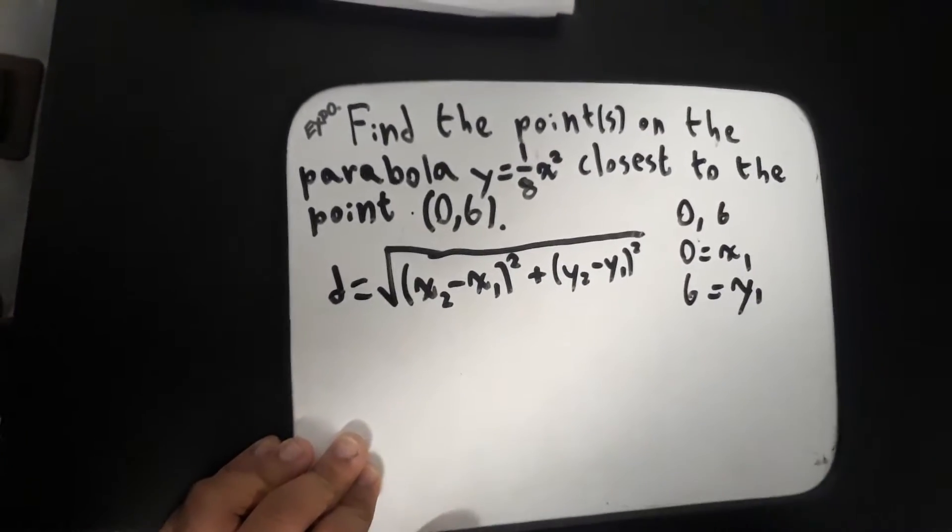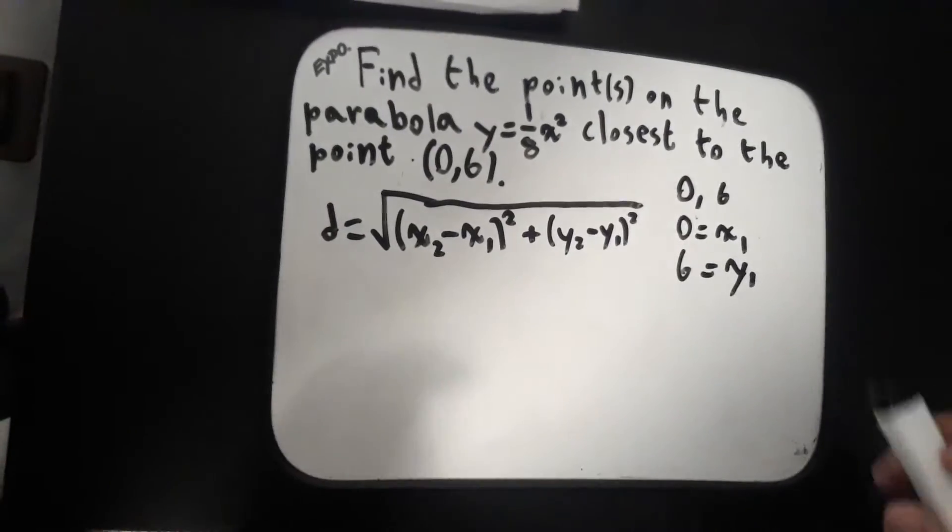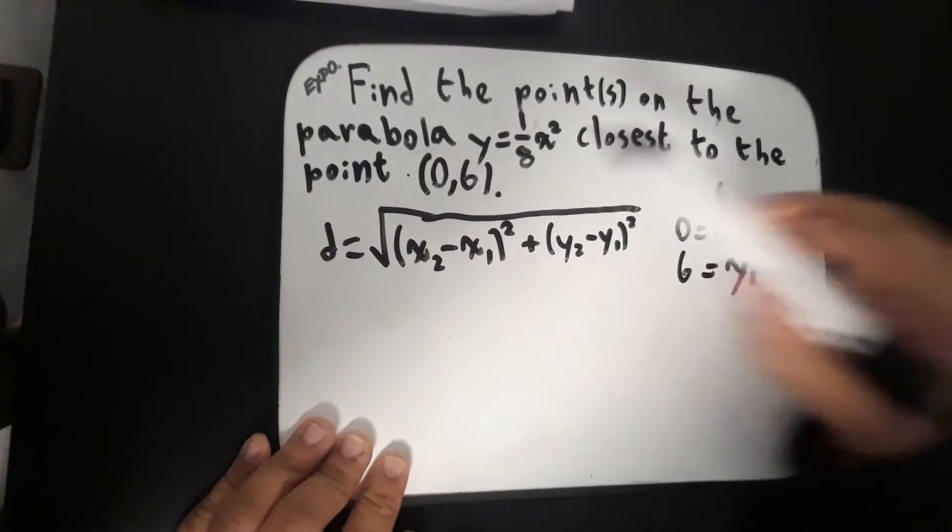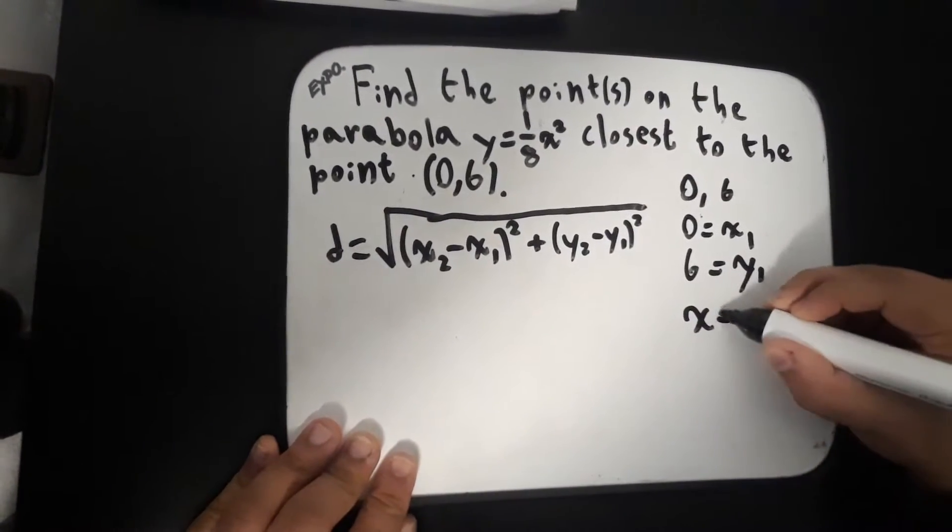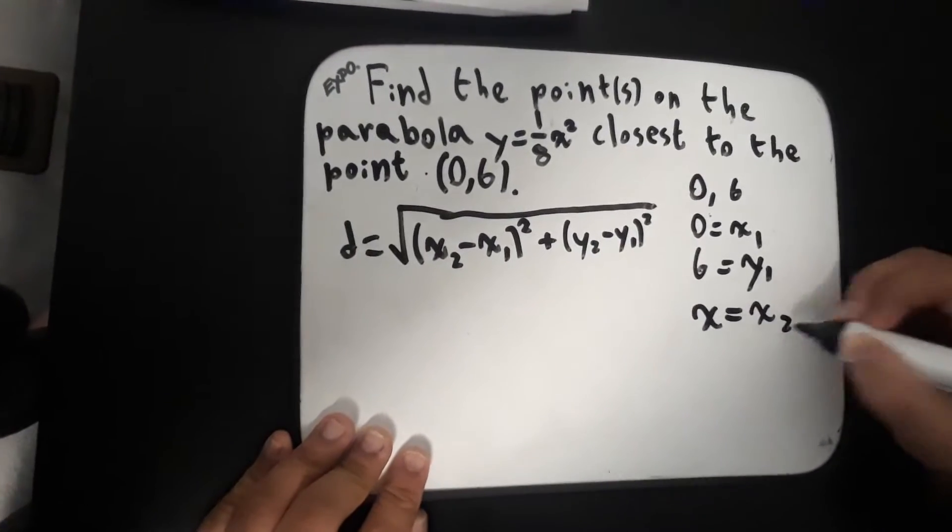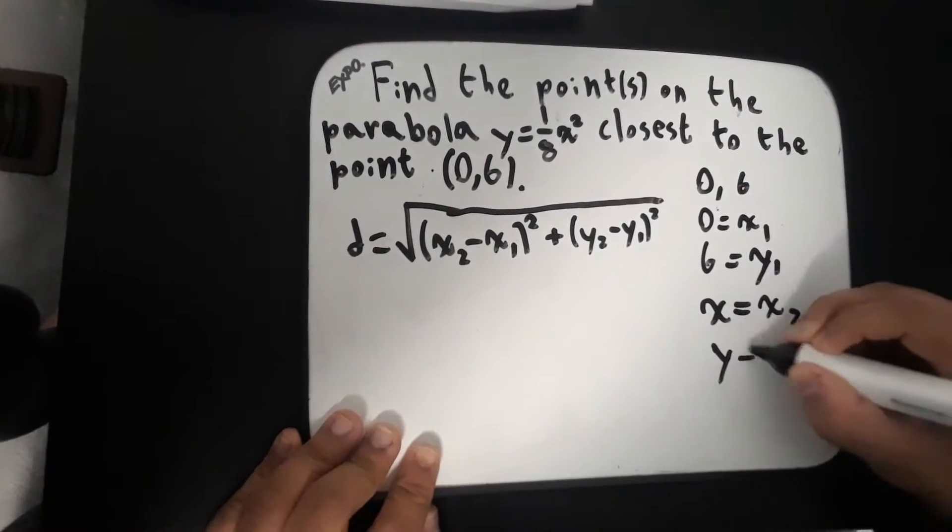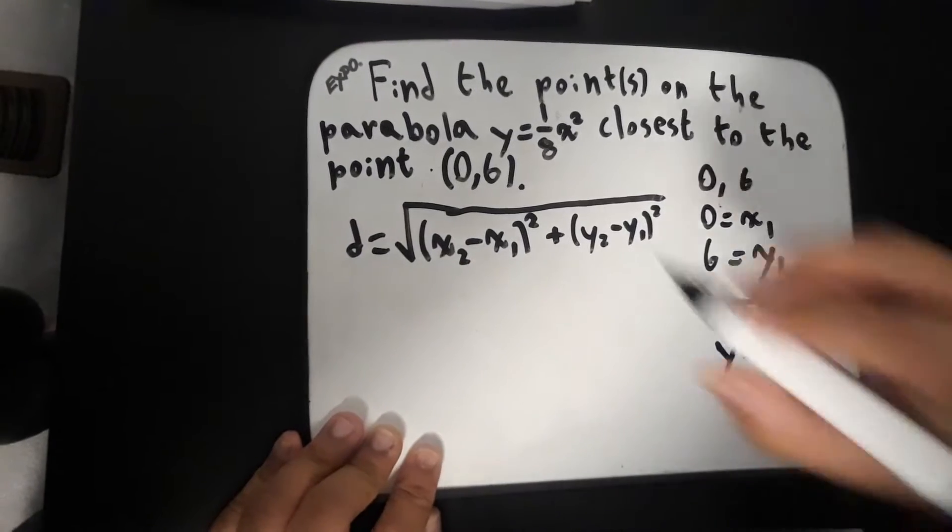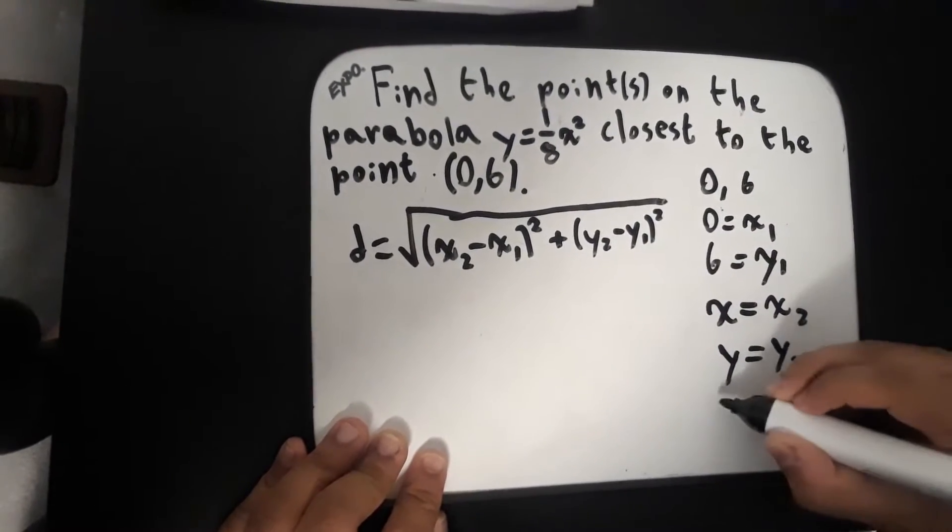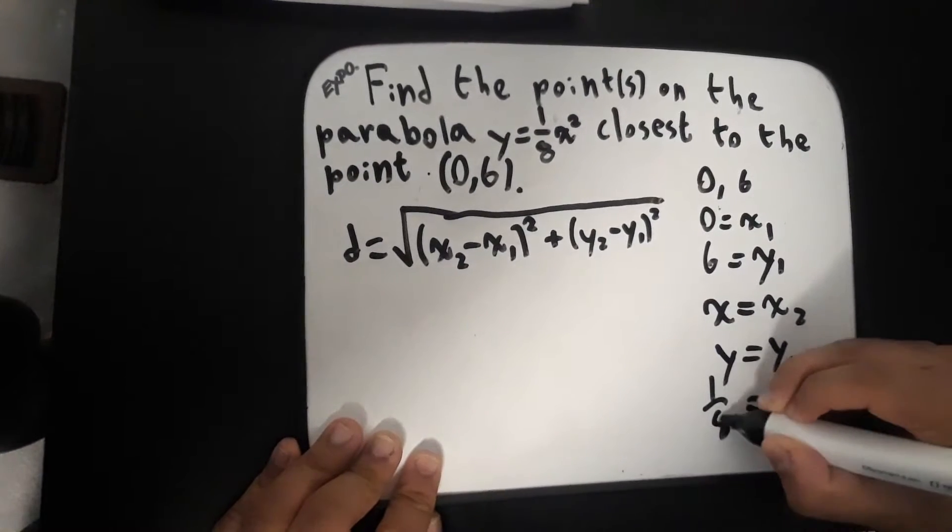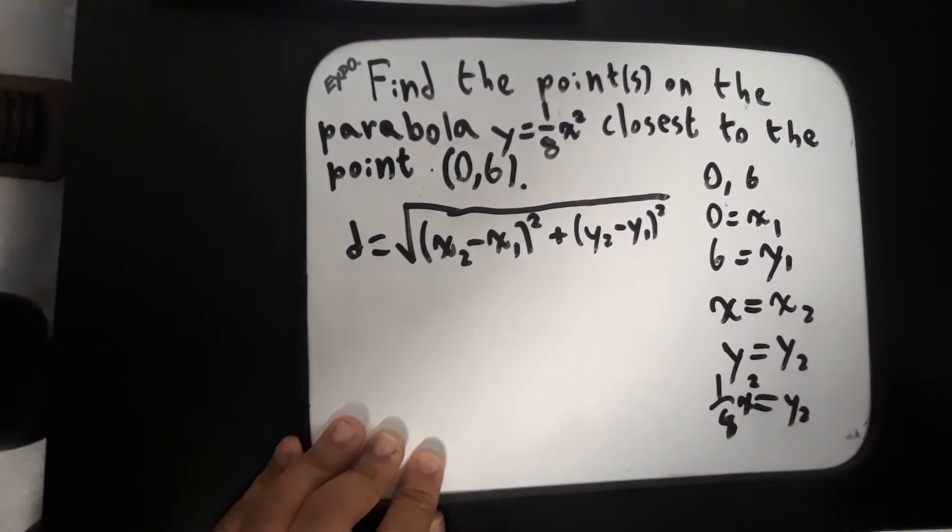But now we need another set of points. That set of points can be our equation. We can have a general point of x being our x2 and y as our y2, which would mean that our y2 is also equal to 1 over 8 times x squared.